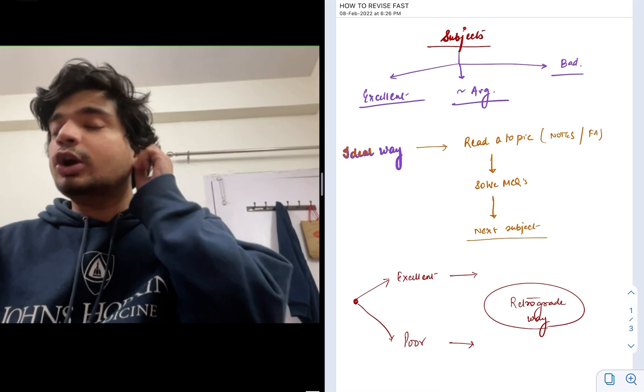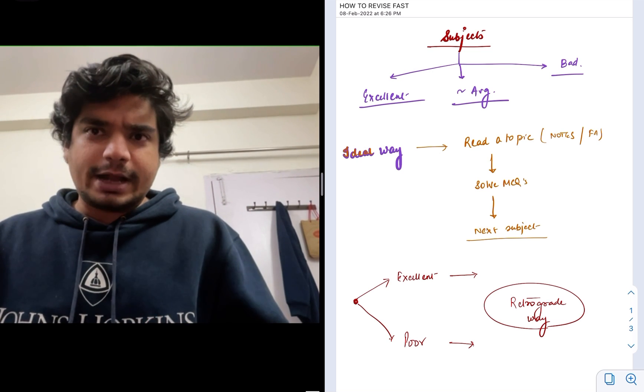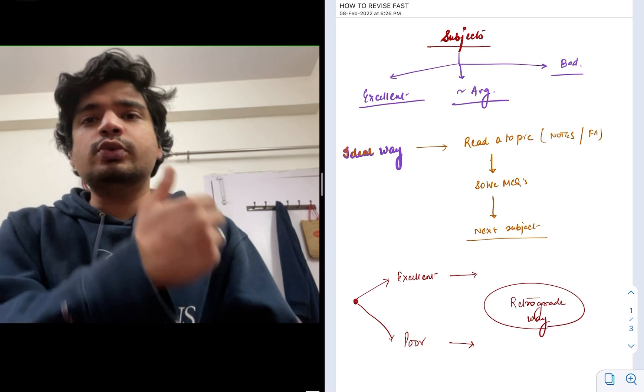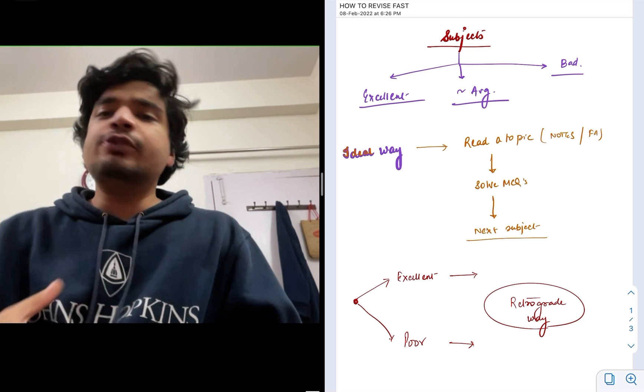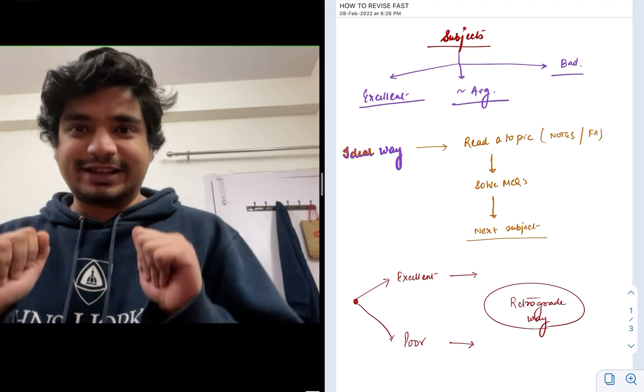You can divide your subjects or topics into those which are excellently prepared. If I take UG for an example, you think your human physiology is excellent. Or if I take PG, for example, you think your physiology as a subject is excellent.